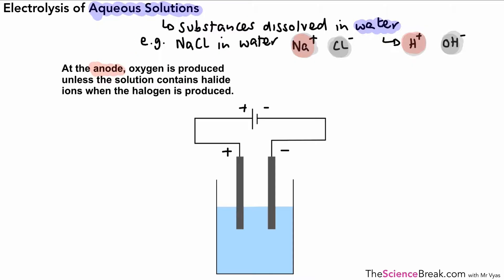At the anode — the positive electrode, on the left-hand side of our diagram — we're going to get oxygen produced, unless the solution contains what we call halide ions, in which case it's going to produce a halogen.